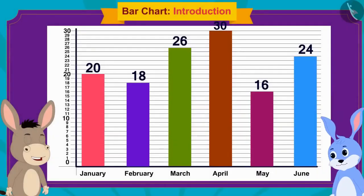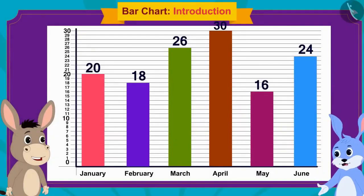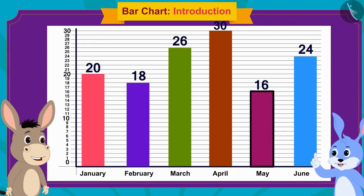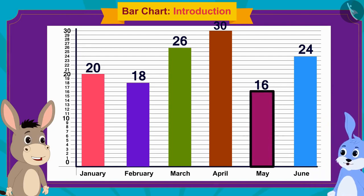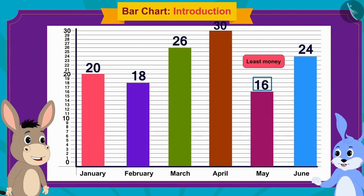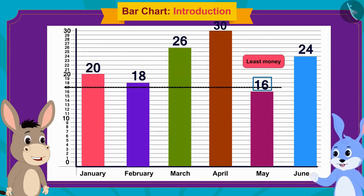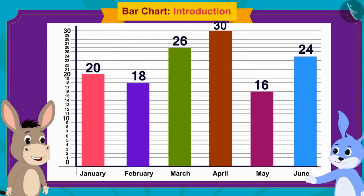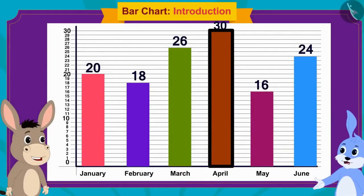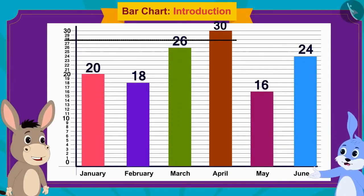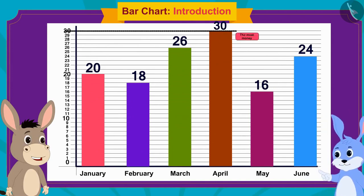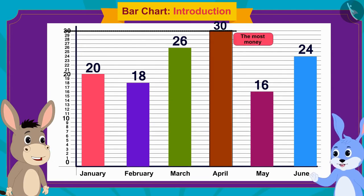Absolutely, Bola, now it has become very easy. The month of May has the smallest rectangle, which means I saved the least money — 16 rupees — in the month of May. And look, the month of April has the longest rectangle. That means I saved the most money — 30 rupees — in the month of April.